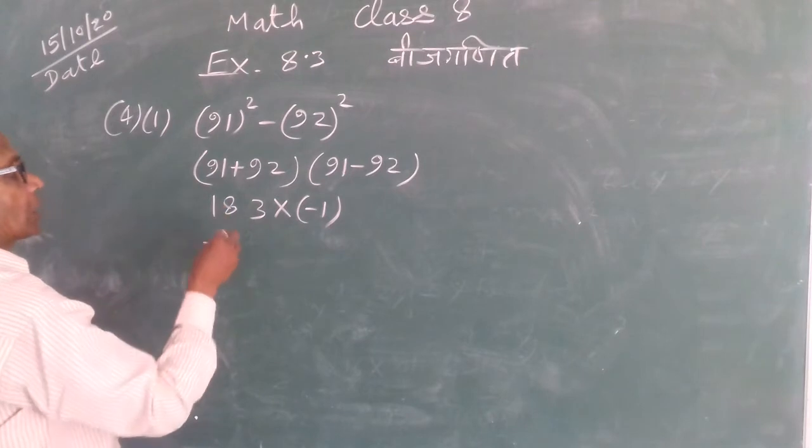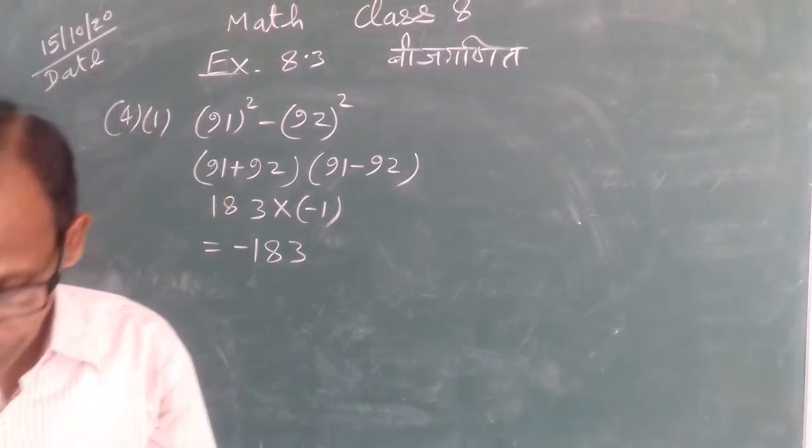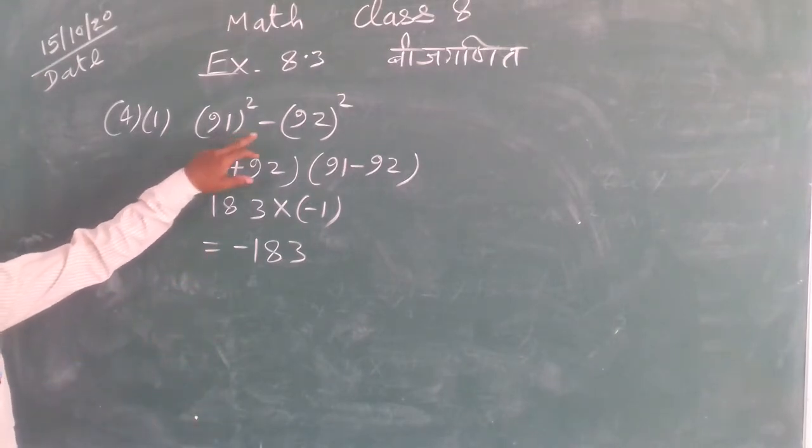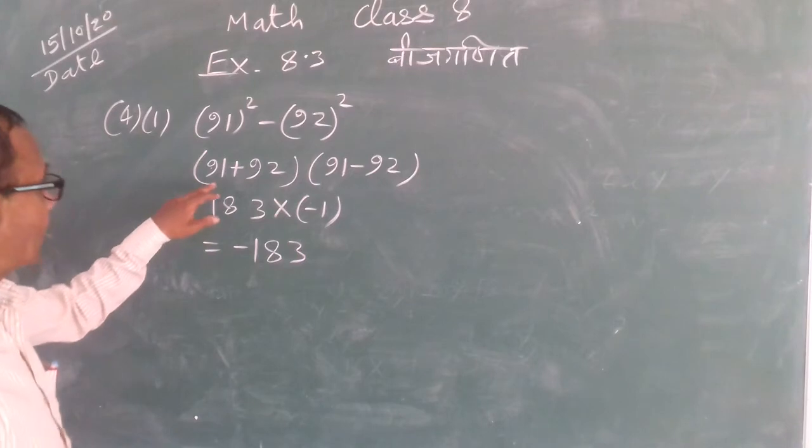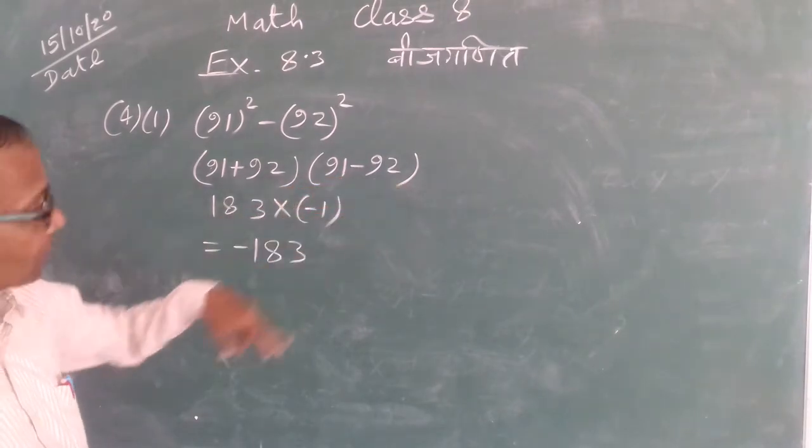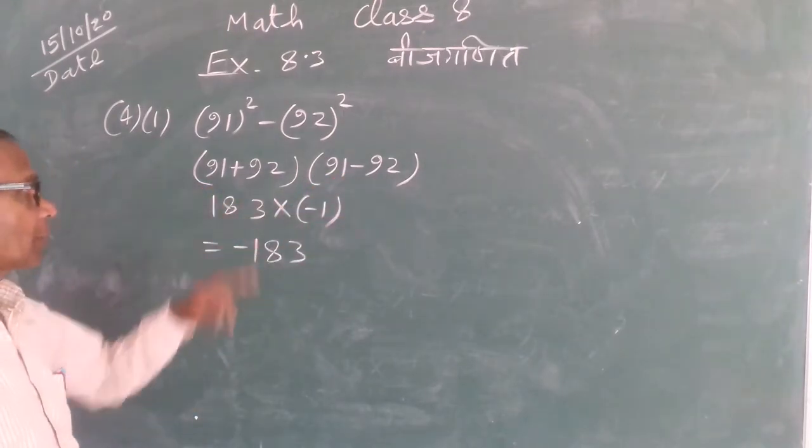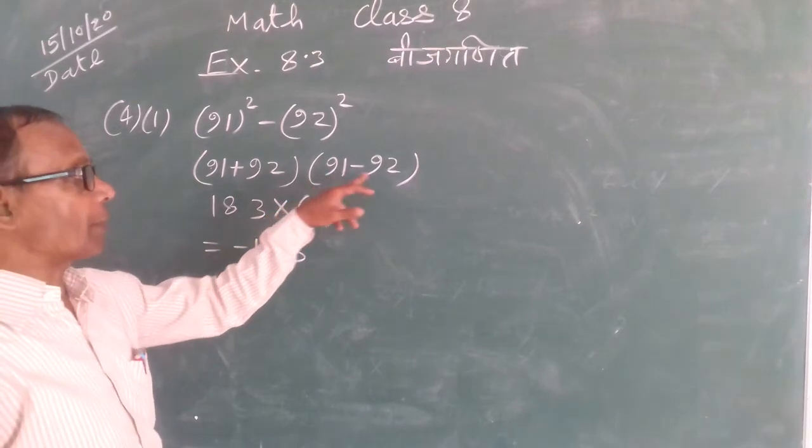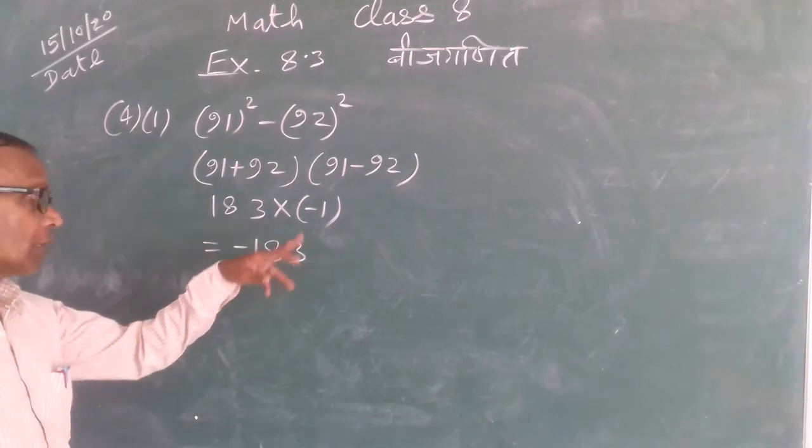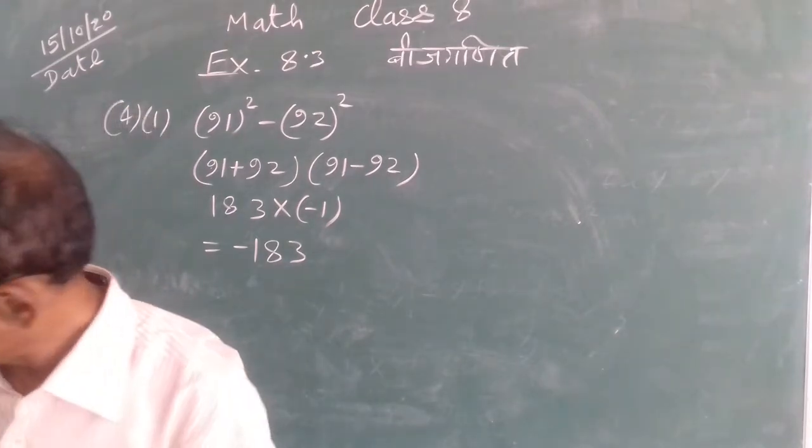We are making minus 1, minus 183. The answer is minus 183.